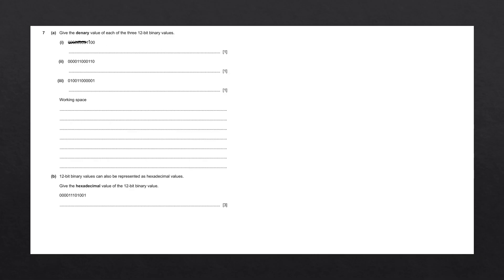Let's go ahead and write our remaining bits down. Starting on the least significant bit, which is our far-right bit, we're going to write down its denary equivalent for that bit position. The easiest way to remember this is by writing down the number 1 and continuously multiplying by 2 as we move left. So 1 multiplied by 2 gives us 2, multiplied by 2 gives us 4, multiplied by 2 gives us 8. Wherever we have a 1, we circle the number beneath; wherever we have a 0, we cross that number out.